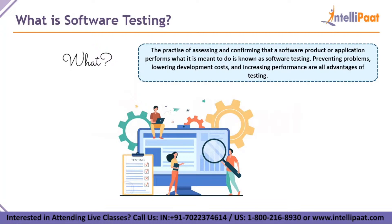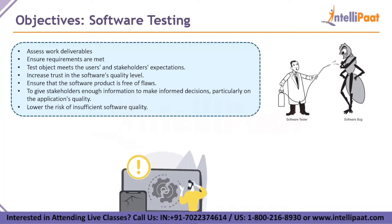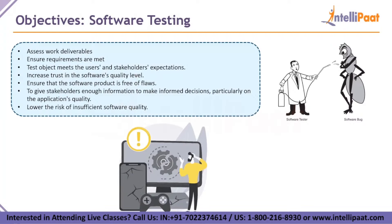Software testing helps predict risky elements in the application and prevent them in the future. Advantages include preventing problems, lowering development costs, and increasing performance. The main objectives of software testing are: assess work deliverables like requirements, design, user stories, and code; ensure all specified requirements are met; determine if the test object meets user and stakeholder expectations; increase trust in the software's quality; ensure the software is free of defects; provide stakeholders enough information to make informed decisions; and lower the risk of insufficient software quality.